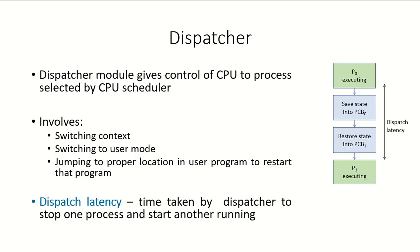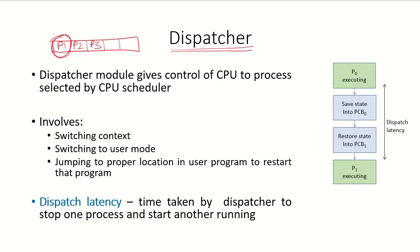Once the scheduler has decided which process from the ready queue — say P1, P2, P3 — will be given the CPU, that is the job of the scheduler. Once that decision has been made, there is another module called the dispatcher. The dispatcher gives control of the CPU to the process selected by the CPU scheduler, handling the context switch and handing over the CPU to the new process.